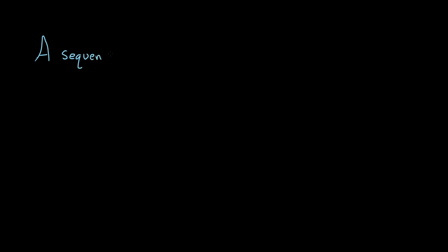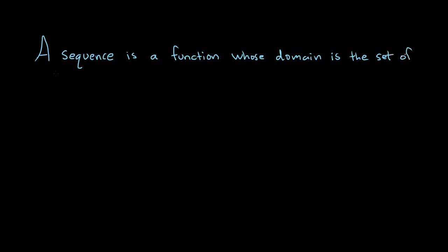In this video, we're briefly going to introduce the notion of sequences and then do a few examples. A sequence is actually a function whose domain — the inputs — are the natural numbers: 1, 2, 3, 4, 5, and so on. Sometimes we allow 0 to be an input, so that's OK as well.